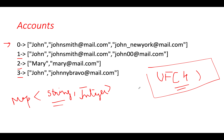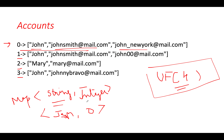Let's start iterating. For the first account, the email johnsmith@mail.com (JSM) doesn't exist in the map, so we add it with account ID zero. Next, john_newyork@mail.com (JNY) also doesn't exist, so we add it with account ID zero as well.